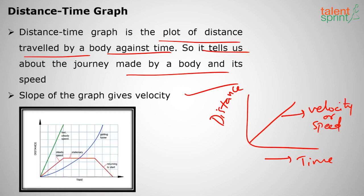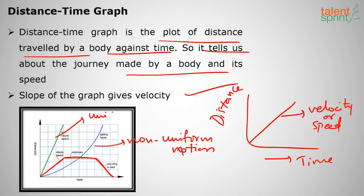If the distance-time graph gives a straight line, it represents uniform velocity or uniform speed, and the motion is called uniform motion. If the line is not straight — a zigzag or curved line — the motion is called non-uniform motion. For example, when velocity is first increasing, then steady, then slowly retarding, that is non-uniform motion.